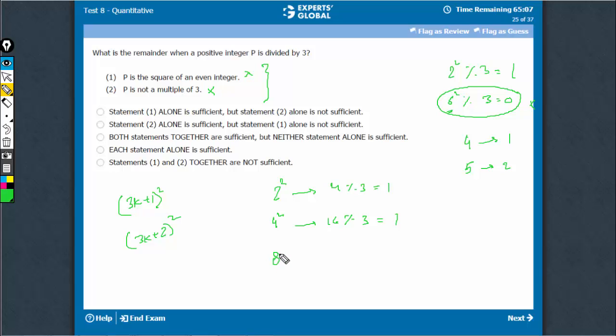6 is not a possibility. 8 squared will be again of this type. So, 8 squared would be 64. The remainder would again be 1.